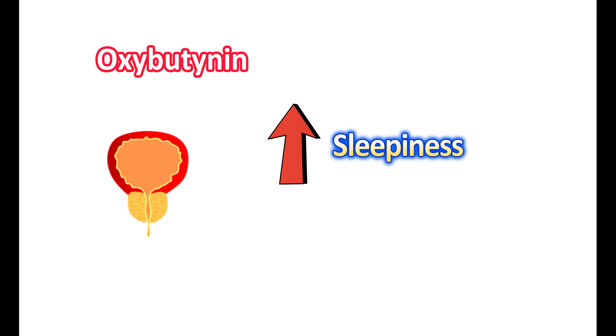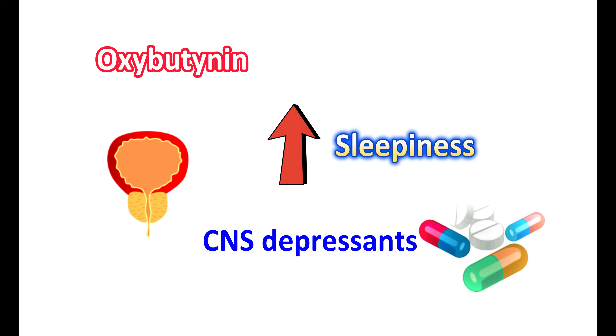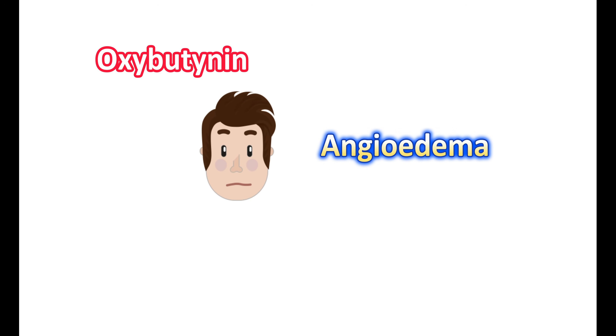Although oxybutynin is intended to act on the bladder and reduce overactive bladder symptoms, it can reach the brain and produce central effects. It can increase sleepiness and reduce mental alertness. This somnolence can be worsened if you are also taking other CNS depressants or sedatives. Excessive alcohol intake can also increase the somnolence produced by this medication, so try to avoid other factors that increase sleepiness and reduce alertness.